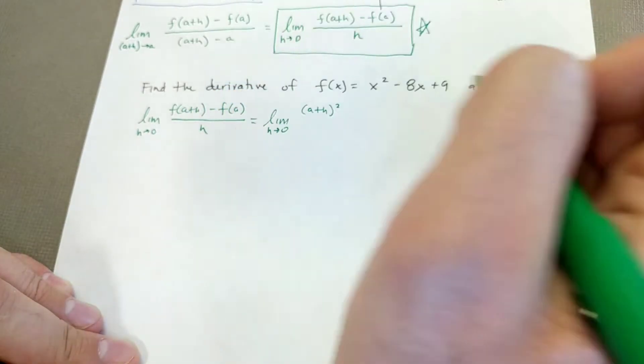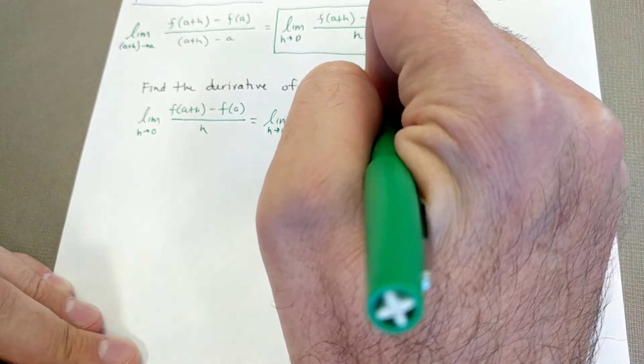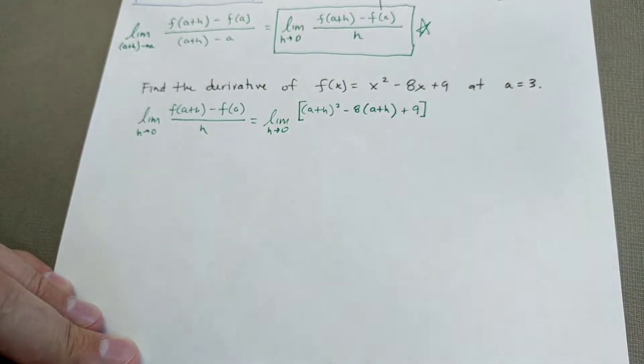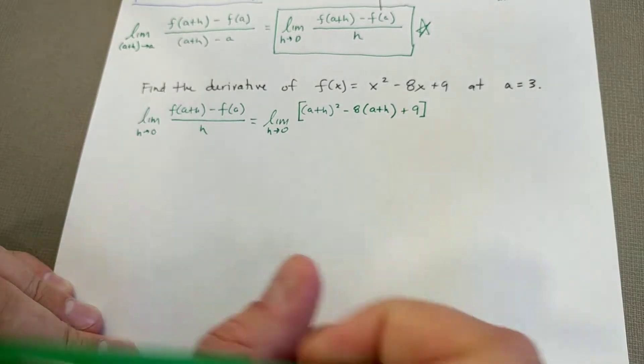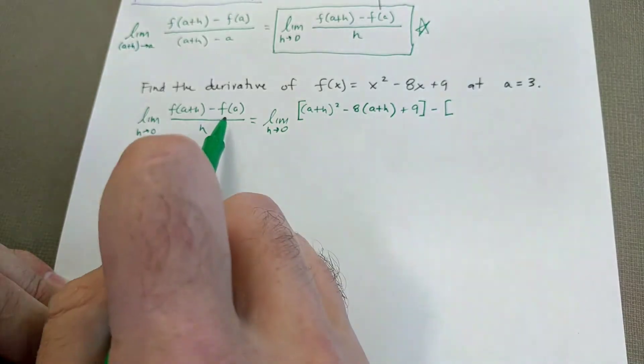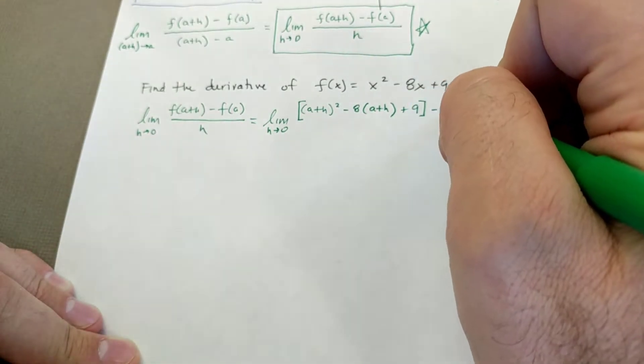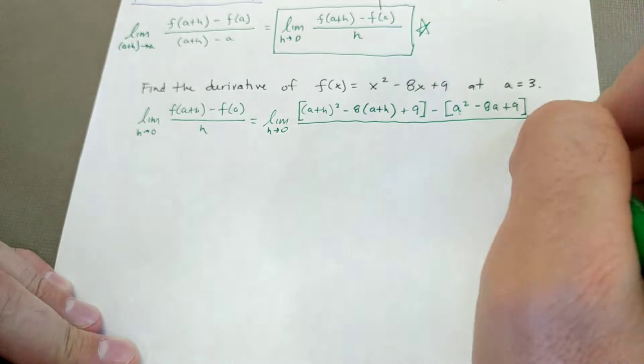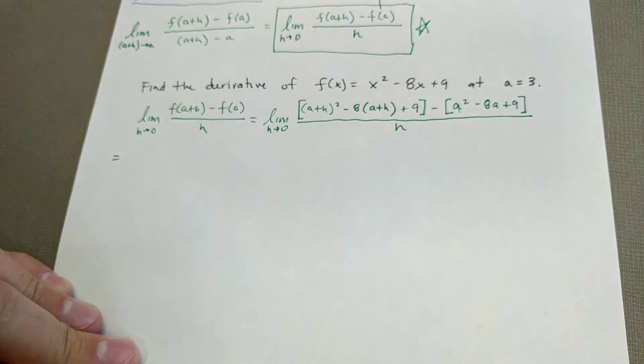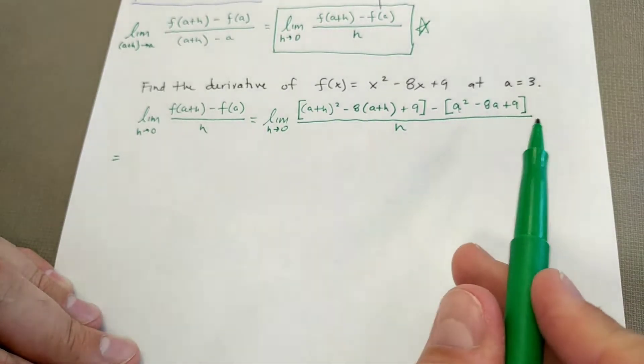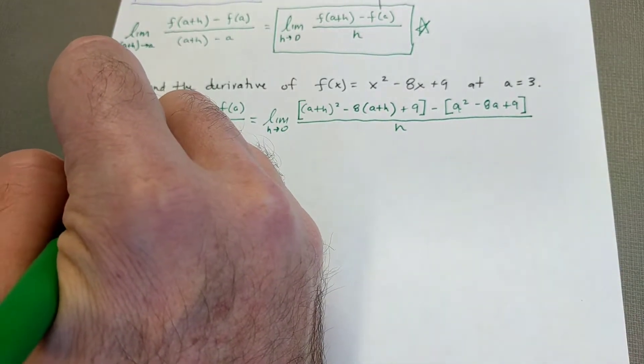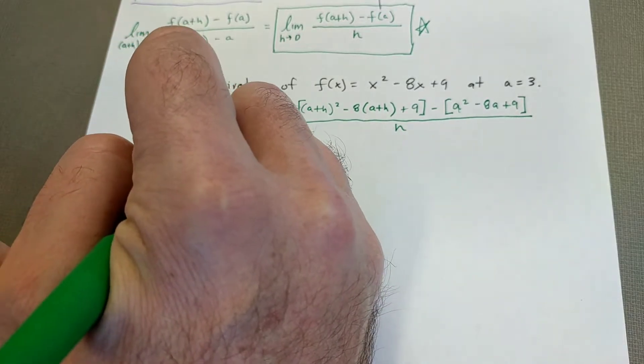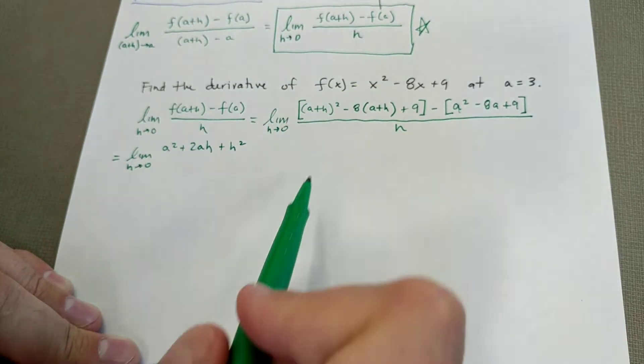So first I want to evaluate F of A plus H. So in this function here, every time I see an X, I'm replacing it with A plus H. So we got A plus H squared minus 8 times A plus H plus 9. I'll put that in brackets. That is the value of F of A plus H. And now we will subtract F of A. So now I'm just going to replace all of those with A. So A squared minus 8A plus 9 all over H.